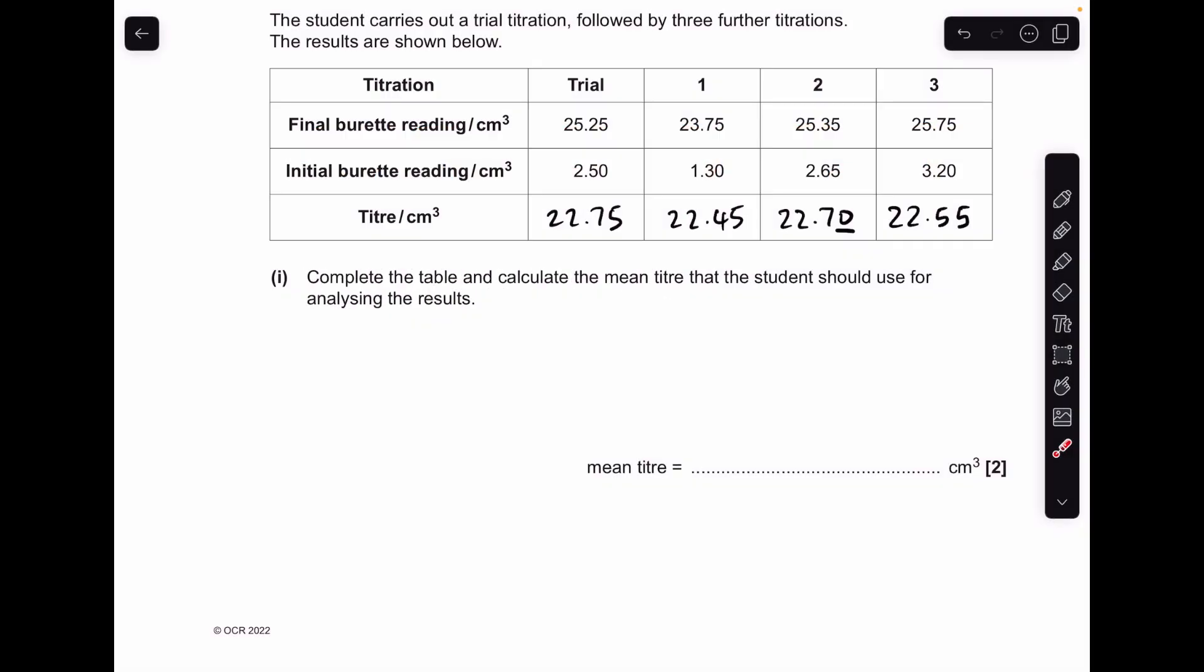Okay, so make a start. Obviously the titres are just the final burette reading minus the initial, so you can see I've written them all in there. Just want to point out this one here, it's really important that you include that zero. So titration readings are always something point something five or something point something zero.